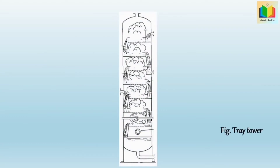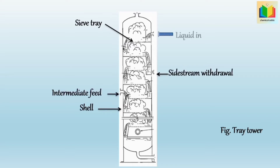Now let's see the diagram of the tray tower. A tray tower is a vertical column or shell which consists of a number of trays. In this tower, sieve trays are used. The liquid enters at the top and flows downward, where it flows across each tray and through a downspout to the tray below.